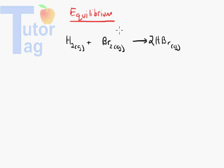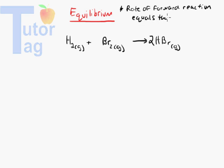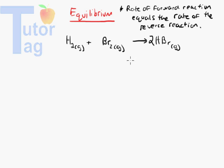When we want to describe what equilibrium is, it's very important to understand that equilibrium means the rate of the forward reaction equals the rate of the reverse reaction. The rate just means how fast the products are being created and how fast the reactants are being created. To represent a system in this state of equilibrium, we use a double arrow, indicating that HBr is forming H₂ and Br₂, and H₂ and Br₂ are forming 2HBr.